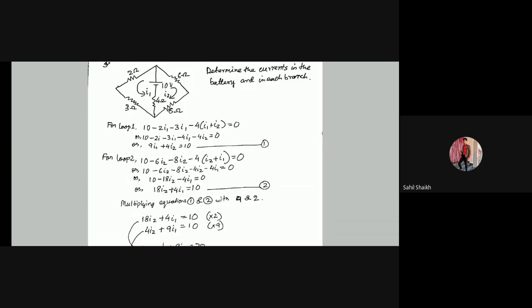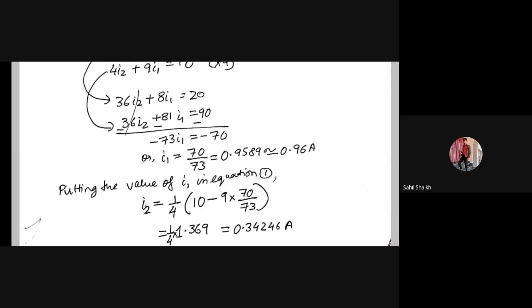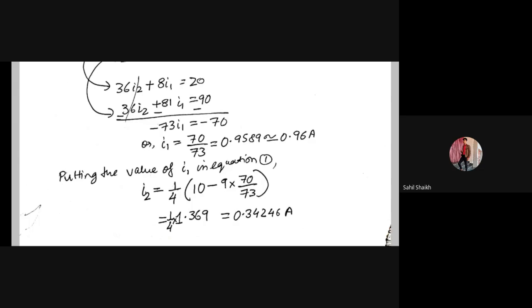Minor mistakes in plus and minus can change the answers, so the equations should be done correctly as per the sign convention. Did everyone understand about the plus and minus signs and why they are taken like this? Any questions? You can see the equations and see how the plus and minus signs appear. I have solved the two equations by multiplying equation 1 with 9 and equation 2 with 2 to eliminate I2. I1 comes out to approximately 0.96 ampere, and I2 equals 0.34246 ampere.